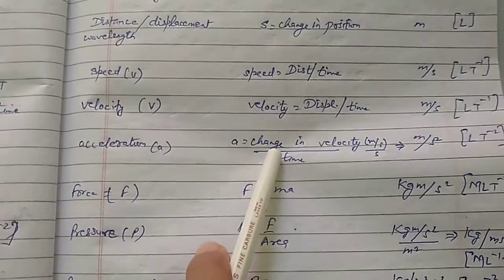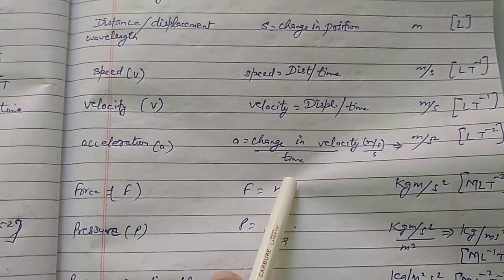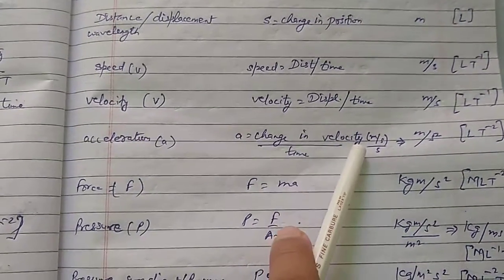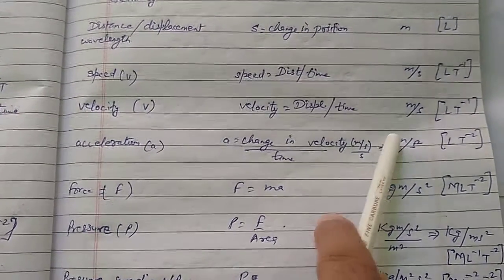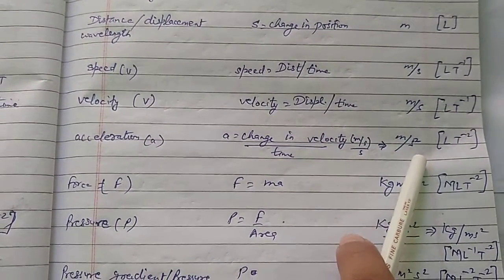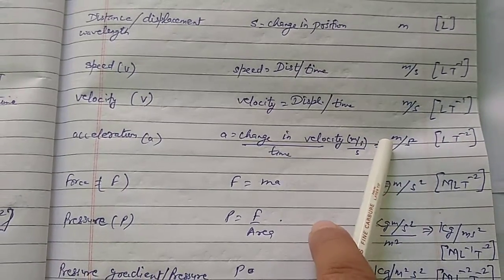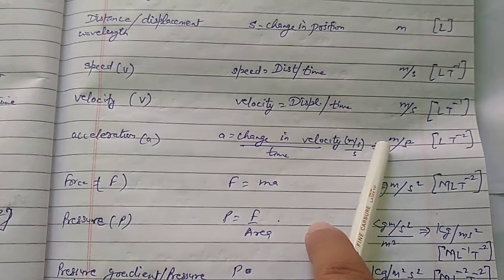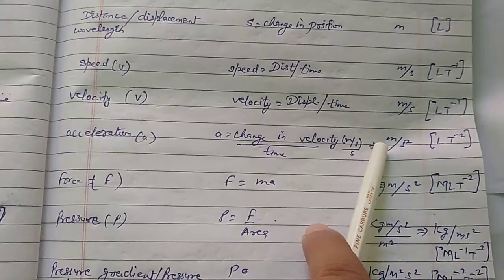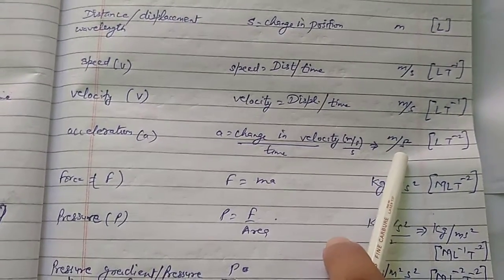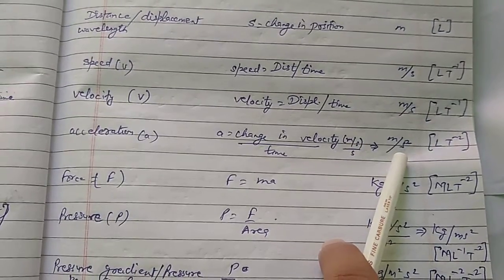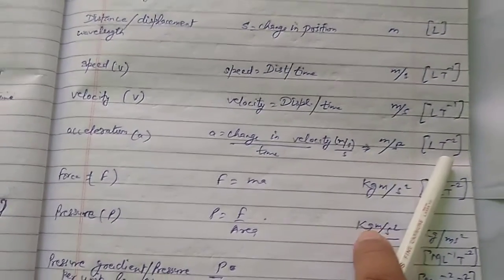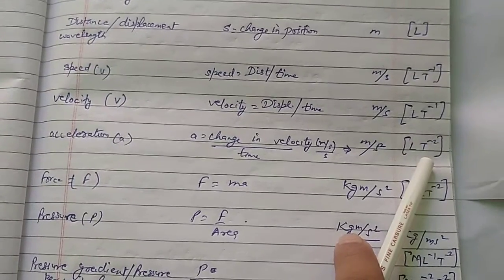Acceleration is defined as change in velocity upon time. Velocity unit is meter per second, time unit is second, therefore acceleration comes out to be meter per second square. The power on meter is 1, so the dimension of length is 1, and the power on second is minus 2, so the dimension of time is minus 2.